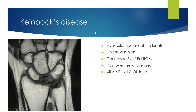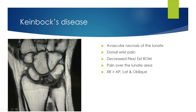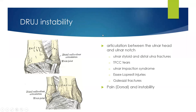Kienböck's disease: avascular necrosis of the lunate. That's dorsal wrist pain, decreased flexion and extension range of motion, pain over the lunate area — which makes sense with the avascular necrosis. X-rays: you want lateral and oblique views. On CT scan you can quite clearly see the bone is not doing very well in that avascular process.